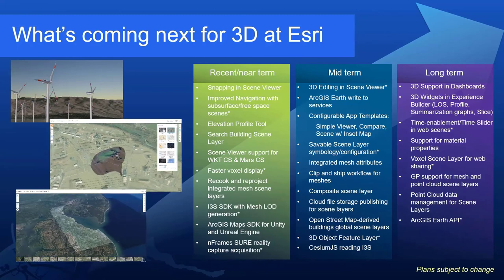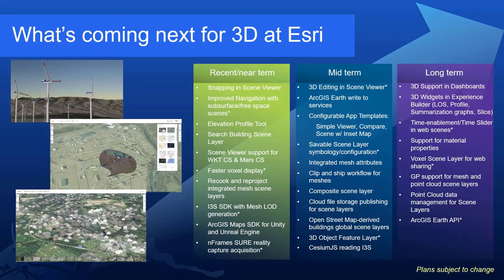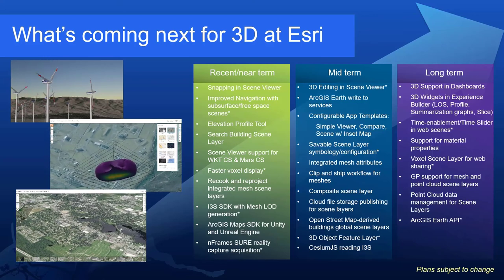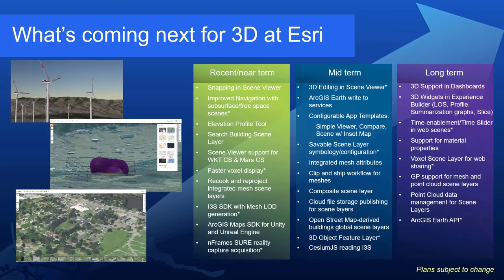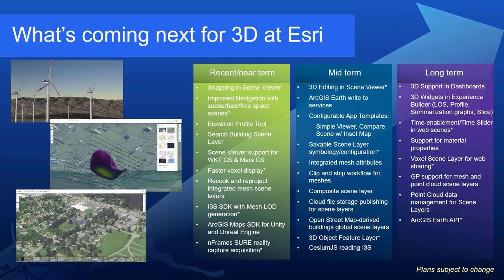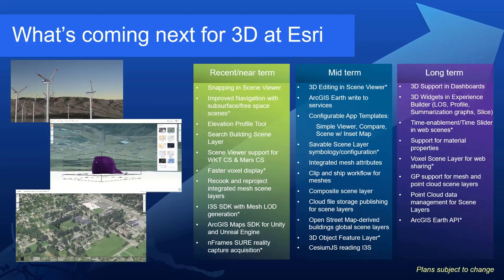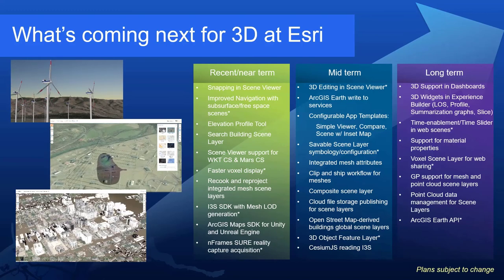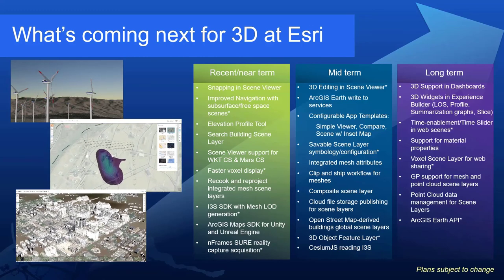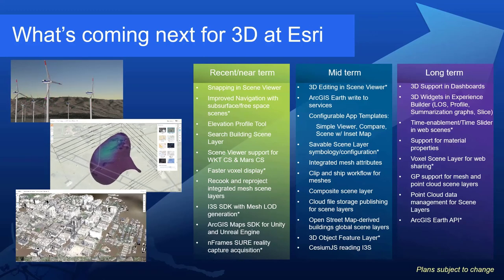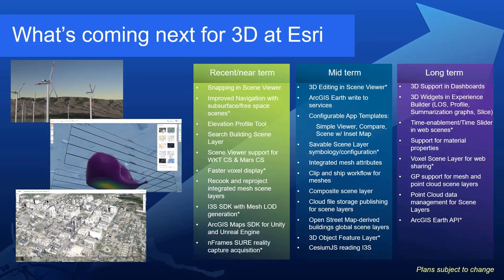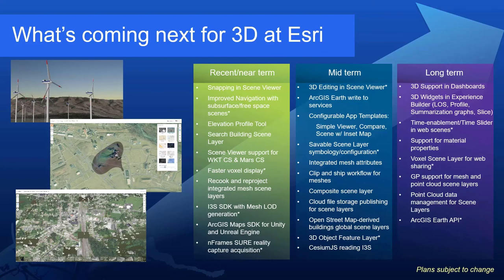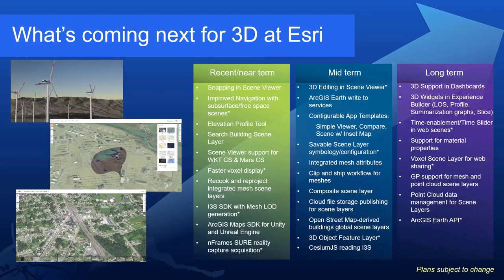What's coming for 3D at Esri: in the near term — snapping in Scene Viewer, elevation profile tool, faster voxel display, i3s SDK and mesh LOD generation, and Inpho Frame Sure reality capture acquisition. In the midterm — RTS Earth rights-to-services, saveable scene layer symbol configuration, composite scene layer, OpenStreetMap-derived buildings, global scene layers, 3D object feature layer, and Cesium.js reading i3s. In the long term — 3D support for dashboards, 3D widgets in Experience Builder, support for material properties, voxel scene layer for web sharing, point cloud data management for scene layers, and RTS Earth API.